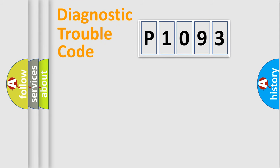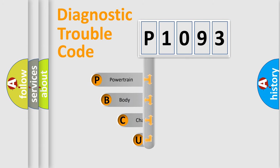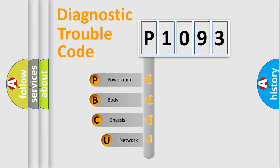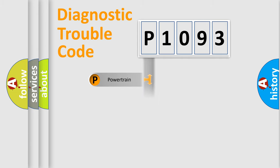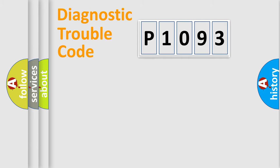Let's do this. First, let's look at the history of diagnostic fault code composition according to the OBD2 protocol, which is unified for all automakers since 2000. We divide the electric system of automobile into four basic units: Powertrain, Body, Chassis, and Network.